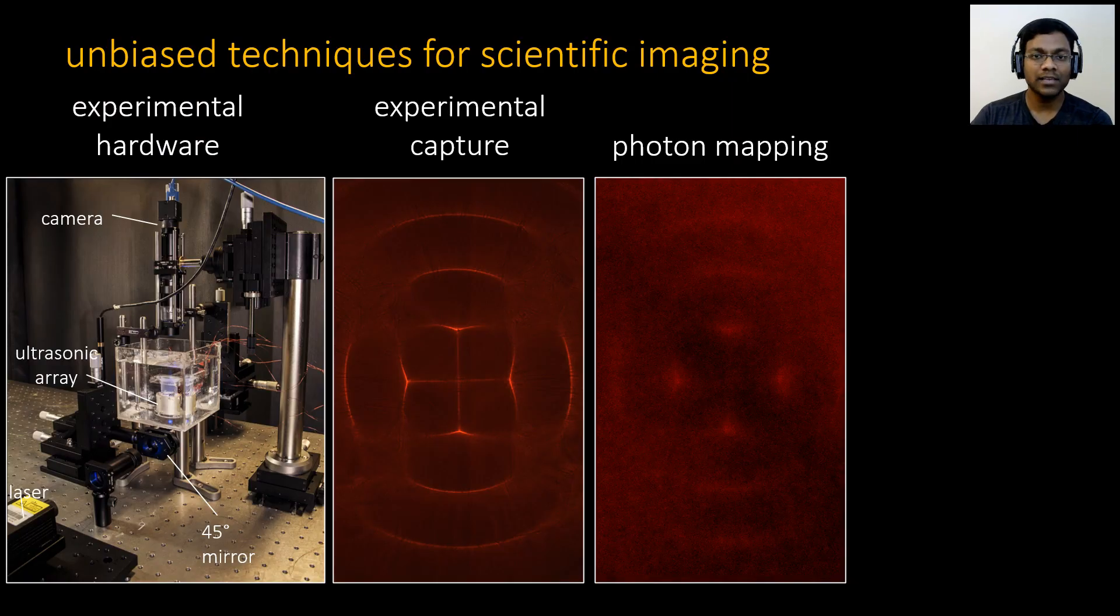As a quick example, here is our attempt to reproduce some experimental measurements using photon mapping algorithms. These measurements are captured using a tissue imaging setup based on the RRTE that I'll describe in more detail later in the talk. The important thing to notice here is that the existing photon mapping techniques struggle to reproduce the measurements in a reasonable amount of time.